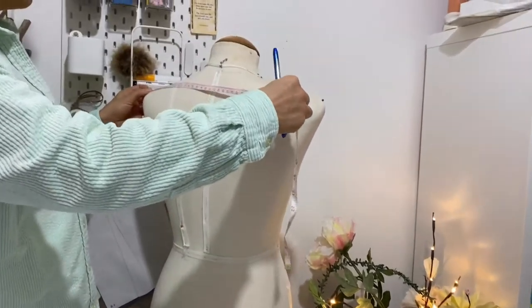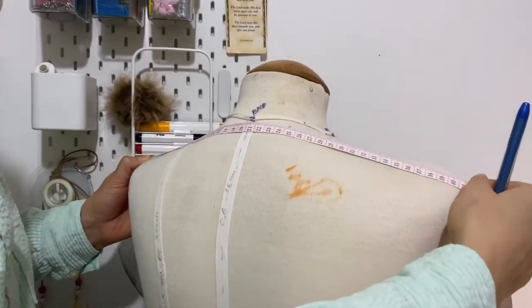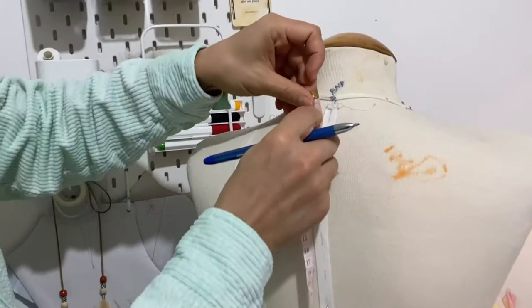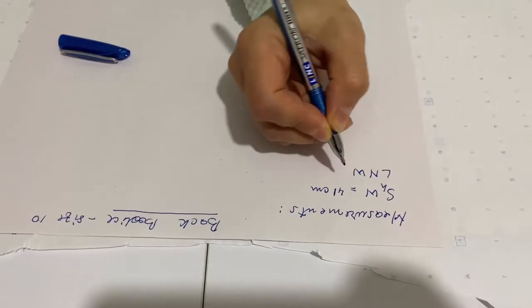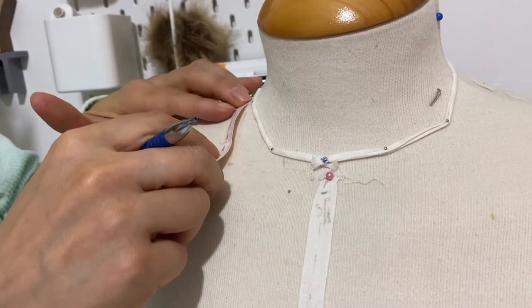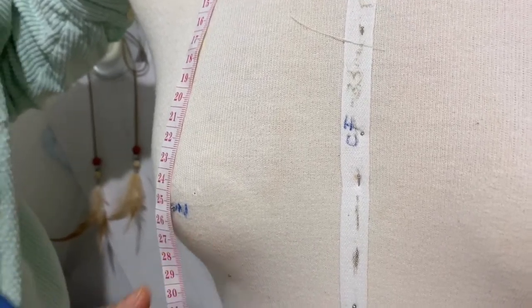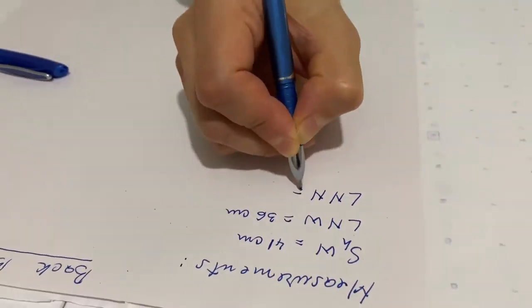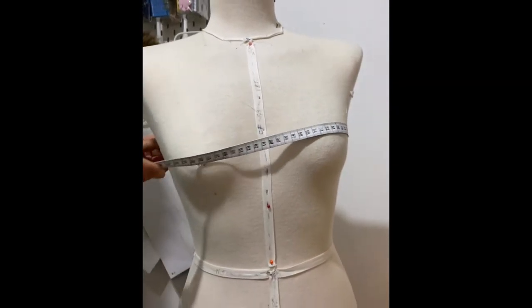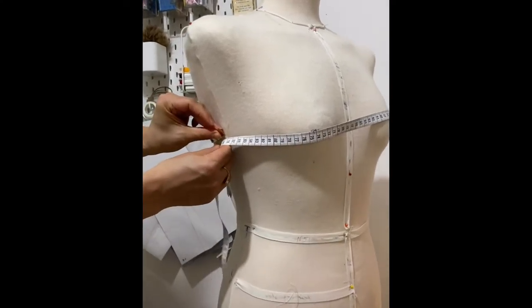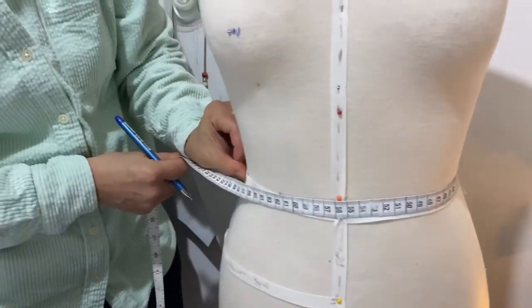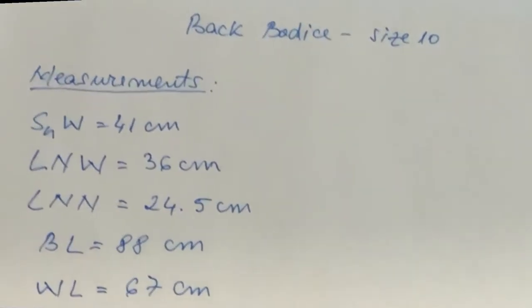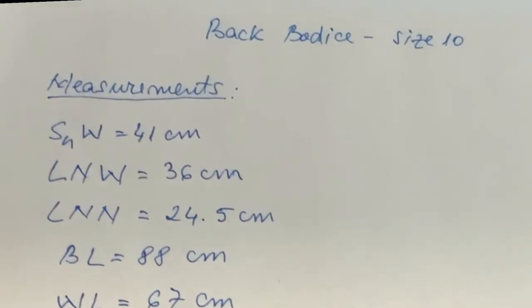The shoulder back will go from shoulder blade to shoulder blade and it's 41 cm. I'll come from the back neck point to the waistline and it's 36 cm. From the neck point to the nipple which is 24.5 cm. Then the bust line over the highest point of the bust which is 88 cm. And lastly the waistline which is 67 cm. Here are all the necessary measurements for constructing the back bodice.